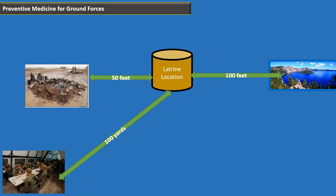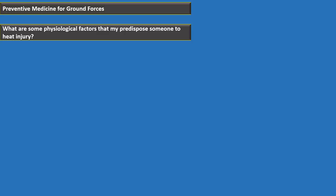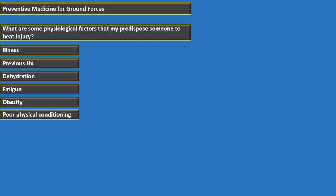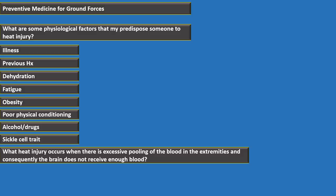Physiological factors that predispose someone to heat injury include previous illness, previous history of heat injury, dehydration, fatigue, obesity, poor physical conditioning, alcohol or drugs, and sickle cell trait. Heat syncope occurs when excessive pooling of blood into the extremities causes the brain not to receive enough blood.